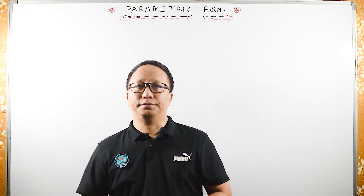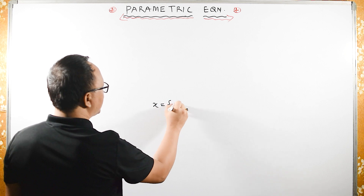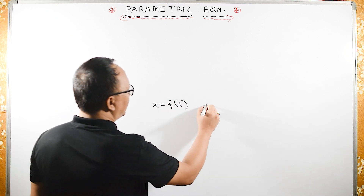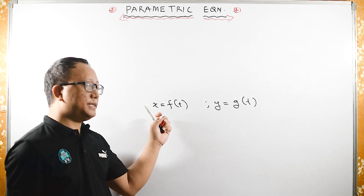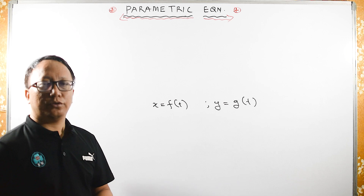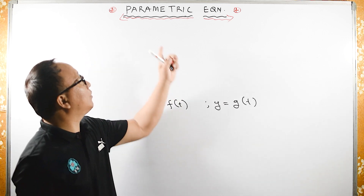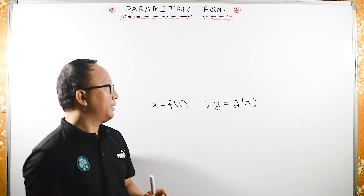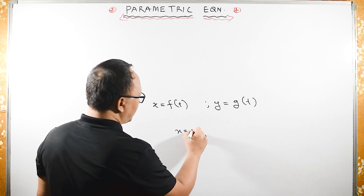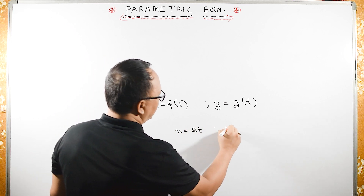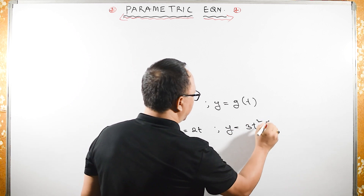Today's topic is Parametric Equations. If I have x equals to a function of t, and also y equals to a function of t — meaning both x and y depend on the variable t. For example, if I have x equals to 2t and y equals to 3t squared.